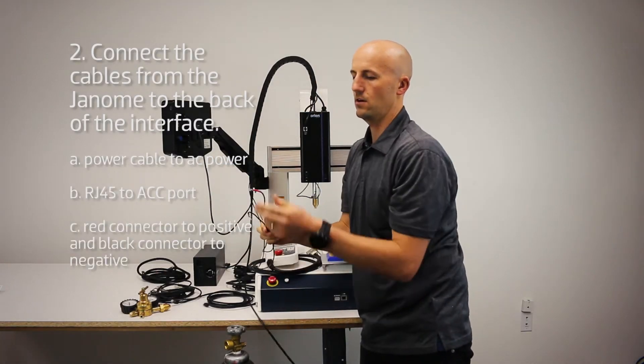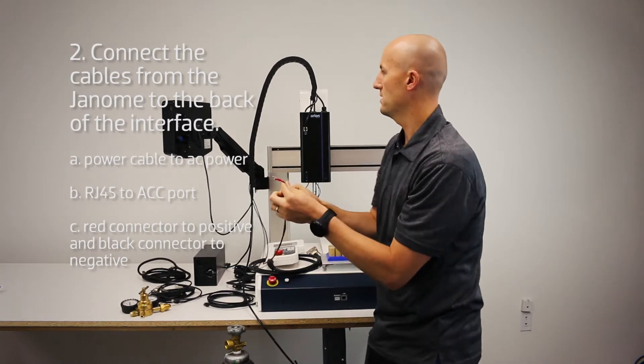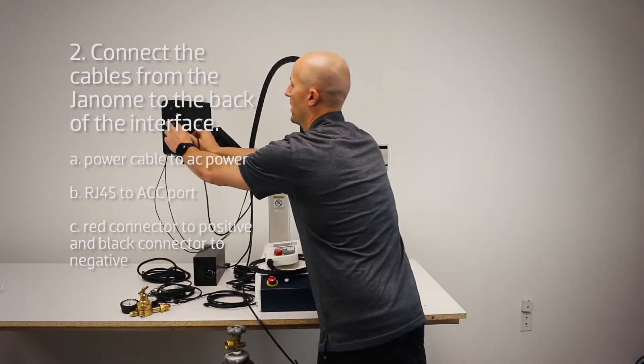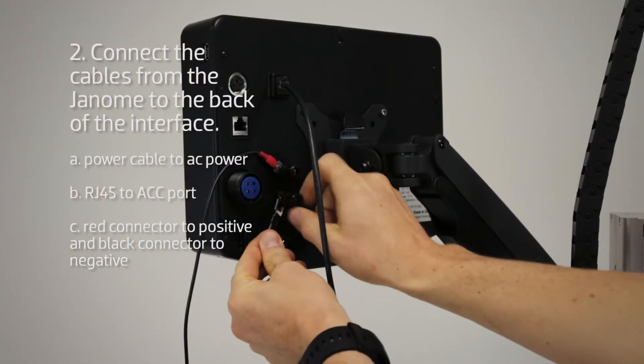Next you have your red cable and your black cable. Red is your positive, so screw that into the positive port on the back of the Orion, and the black one goes to the negative.